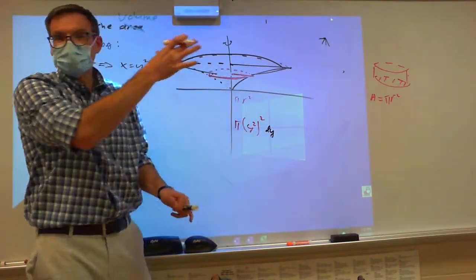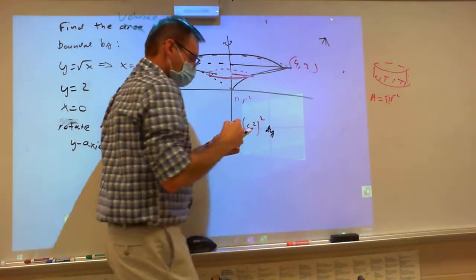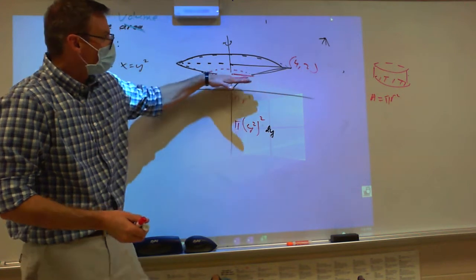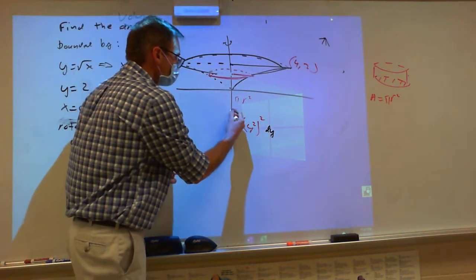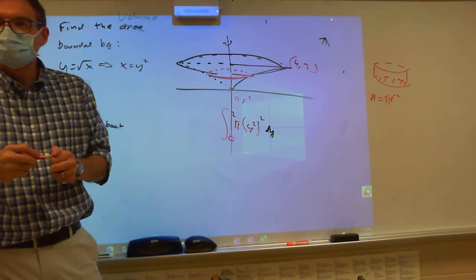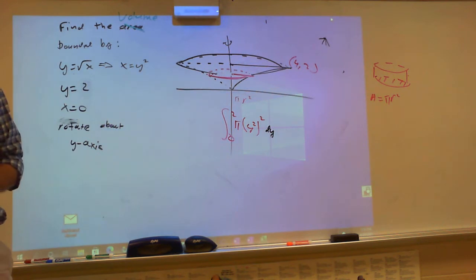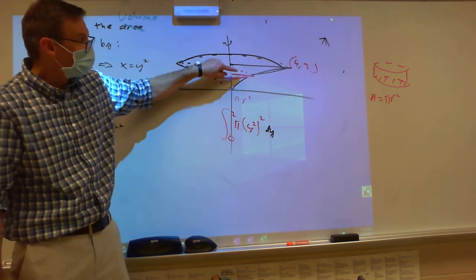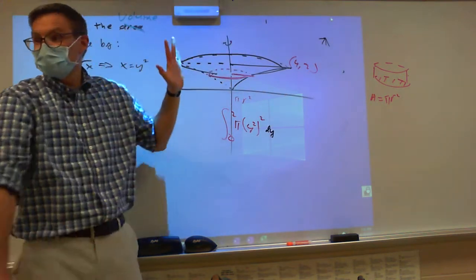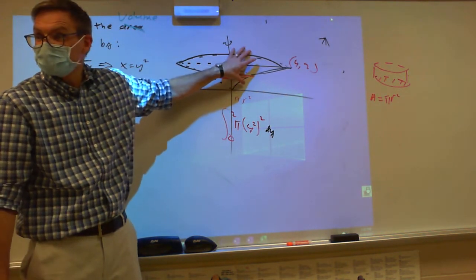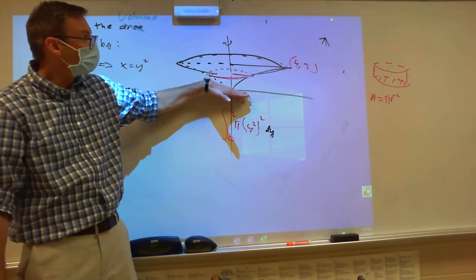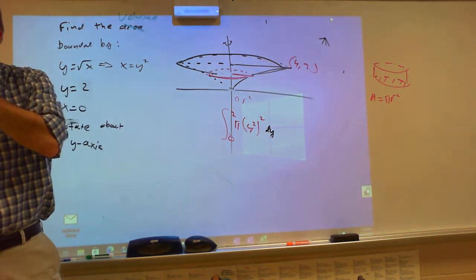This represents that one disk. The bounds are in terms of y. Where does my rectangle go? From zero to two. My rectangle is going to go from zero to two. You pay attention to the rectangle in the original area and ask where can that rectangle go. Since it's horizontal I'm interested in y values. The lowest y value it gets is zero, the highest is two.